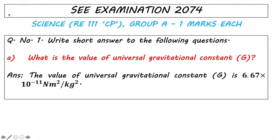Question Number 1(a): What is the value of universal gravitational constant G? The value of universal gravitational constant G is 6.67×10⁻¹¹ Nm²/kg².